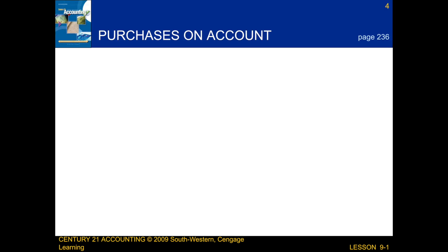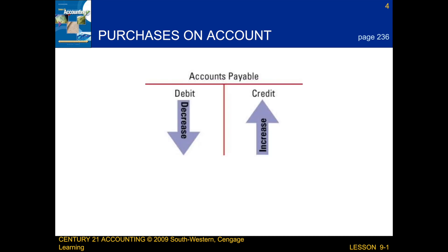Next we're going to be talking about purchases on account. As we've learned before, accounts payable is a liability account. This account has a normal credit balance, so it increases by a credit and decreases by a debit.